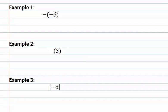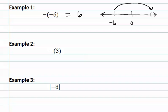Example one shows a negative sign in front of parentheses containing negative six. We must assess what these mean. This is essentially asking: what is the opposite of negative six? The opposite of negative six would be six. We can see this on a number line — if negative six is located here, finding its opposite means finding its reflection on the other side, which would be positive six.